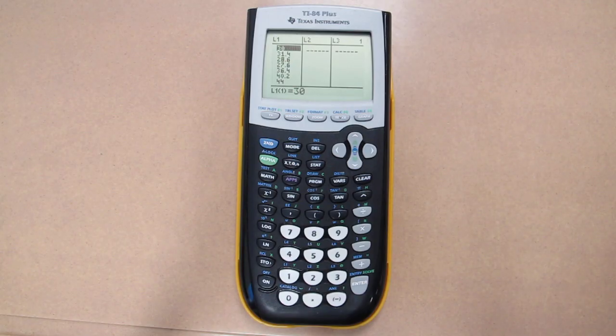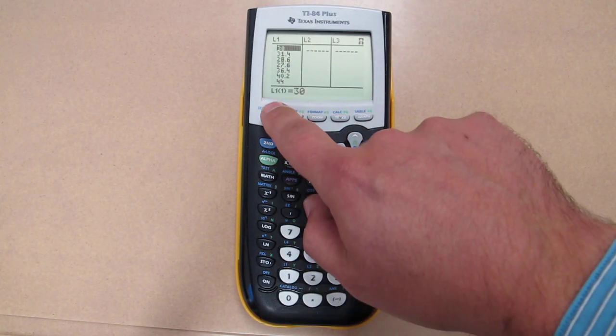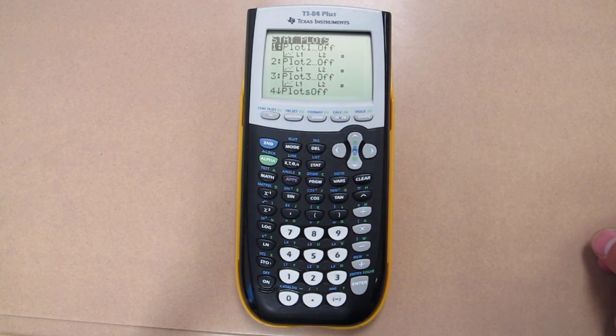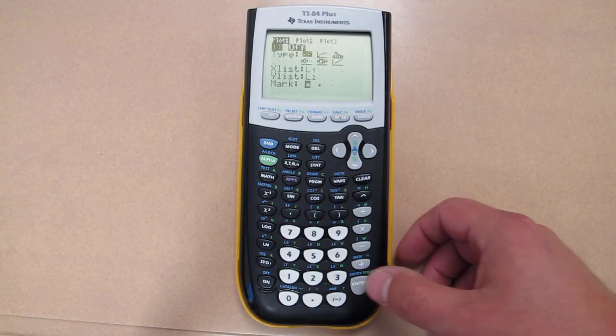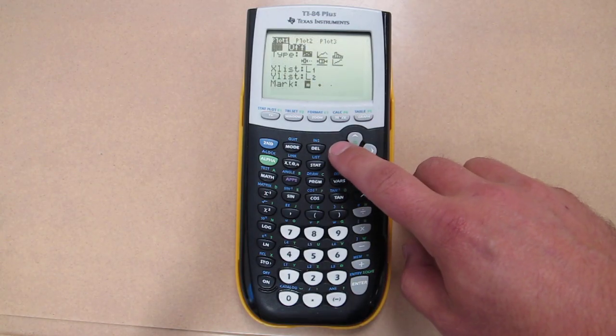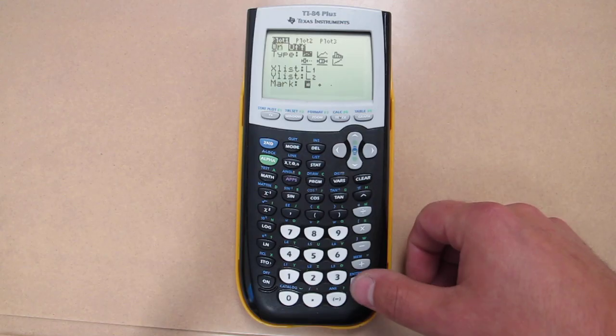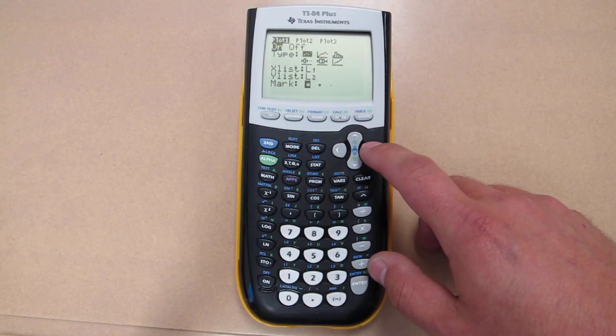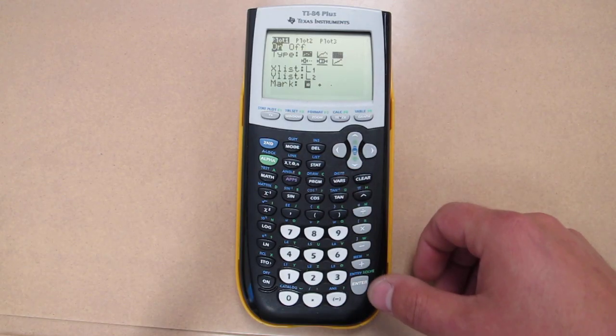To make a histogram of this data, we press second, stat plot. Turn plot 1 on by pressing enter and going to the on option. And then for type, select the histogram, which is that option.